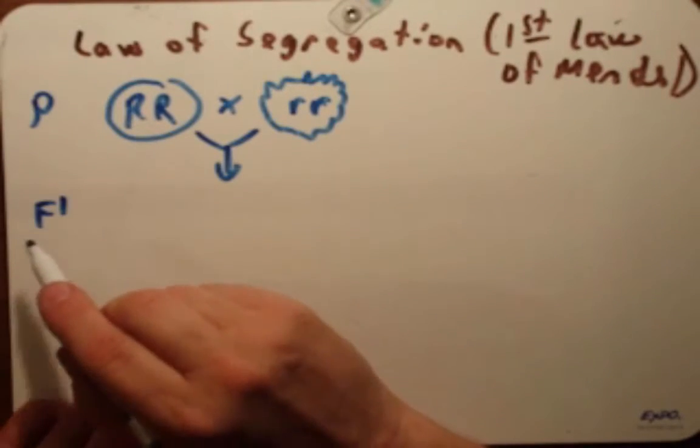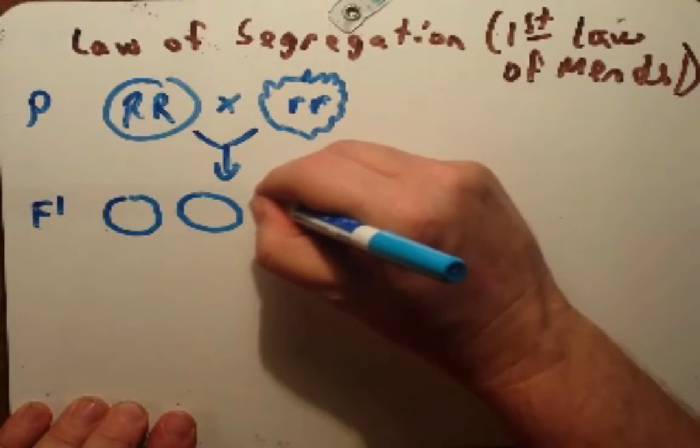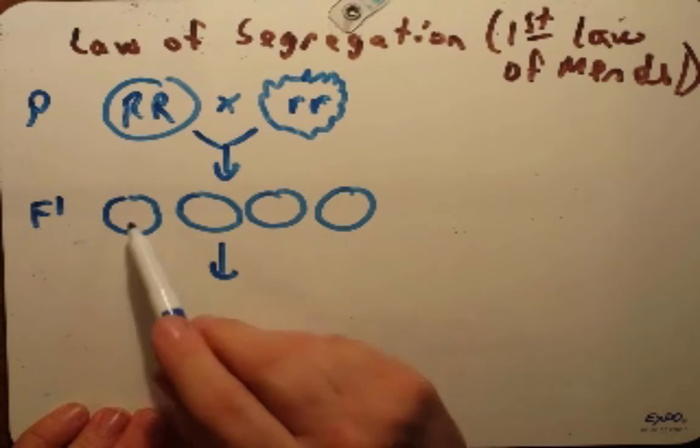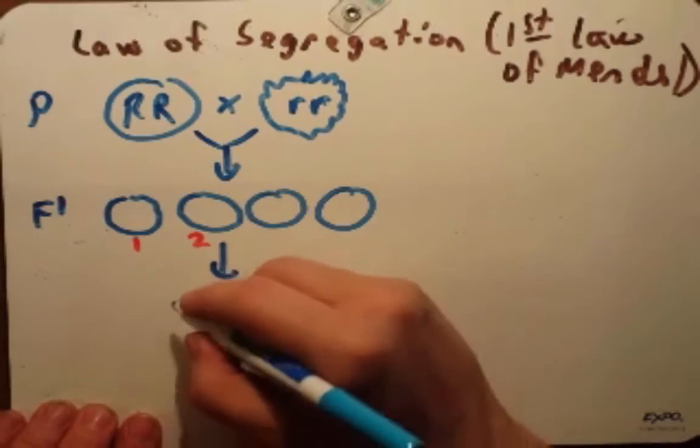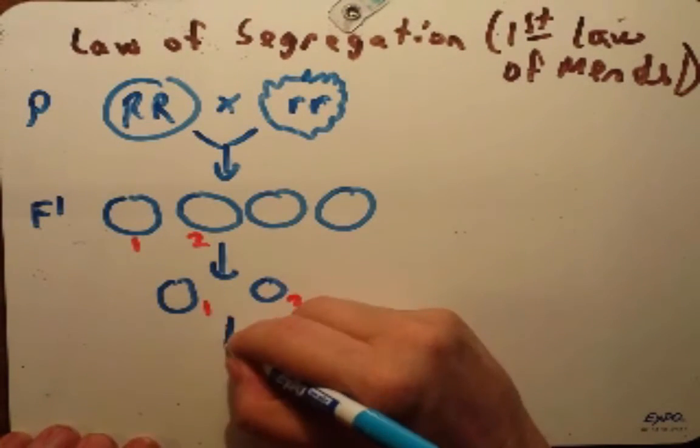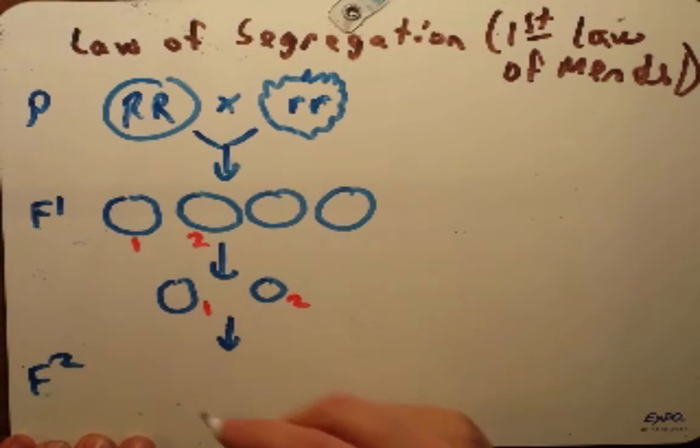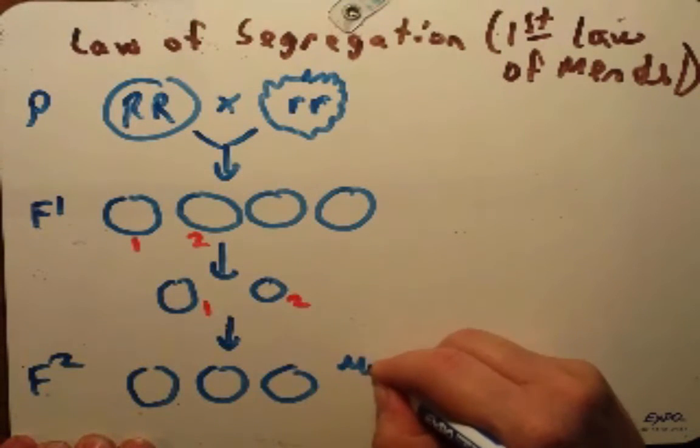In the next generation, which we call F1, which stands for familial generation, what he saw were four round plants. Then the next cross he did was he took two of these seeds. Any of them would have done it. Let's say he took these two and crossed them together. They're both round.